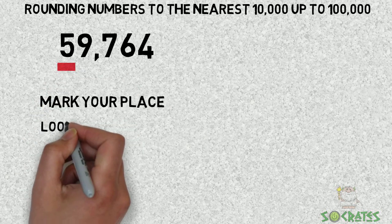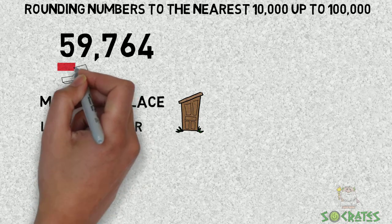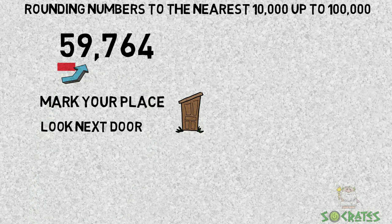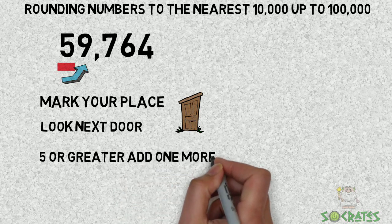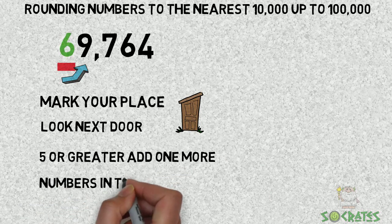So the 5 is in the 10,000 place. Mark your place. Look next door. The 9 is gonna tell us 5 or greater. Add one more. So 5 plus 1 is 6.